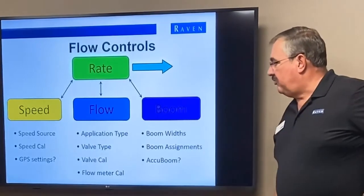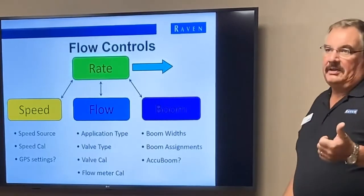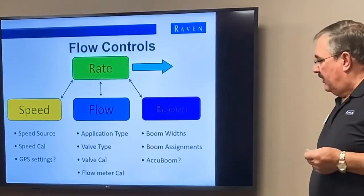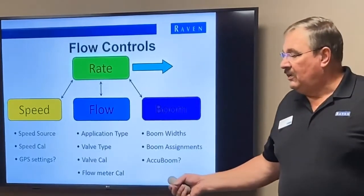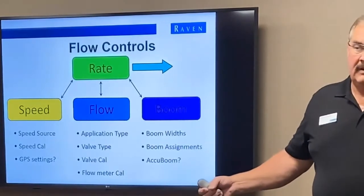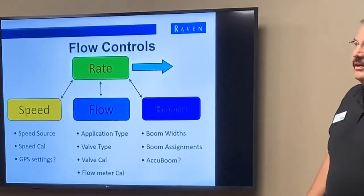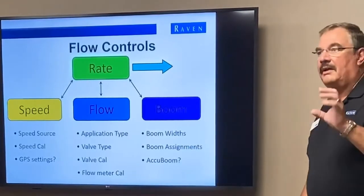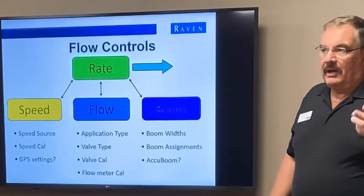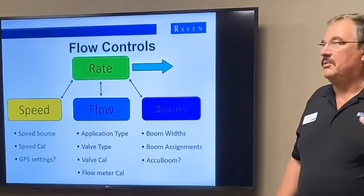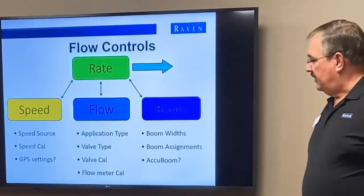When it comes to flow, there are some things we have to know. First is the application type — are we doing anhydrous ammonia, spray, or dry? We can do all three and calculate all of them. We have to enter that in so the controller can calculate accordingly, and we have to know the readings it gets from the other components based on whatever application type you're using.